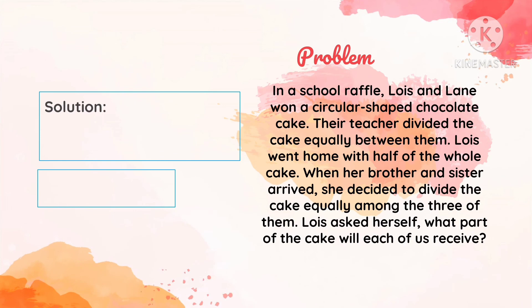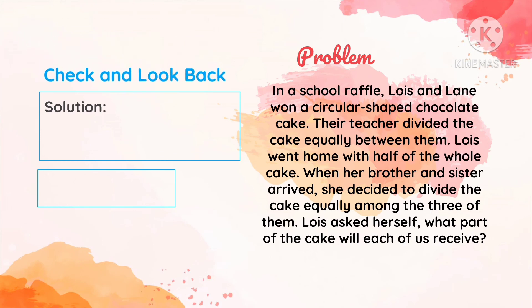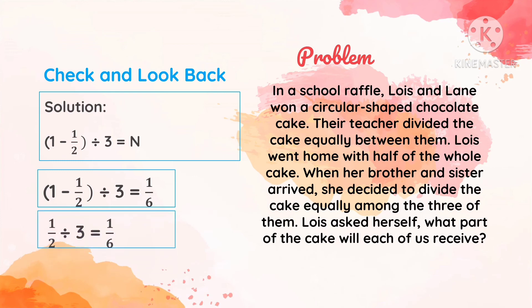To check if our answer is correct, we substitute the value of n. Our answer was 1 over 6. So: one-half divided by 3 is equal to 1 over 6.